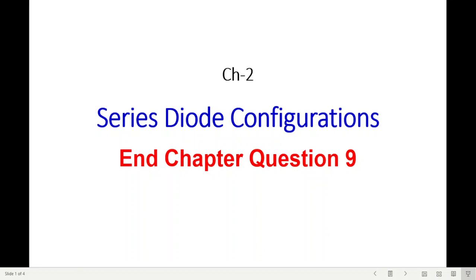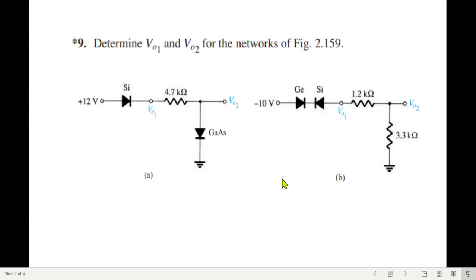Bismillahirrahmanirrahim. This very short video is on the request of a student. Here we'll be solving end-chapter question 9 from chapter 2, which relates to series diode configuration. These are the two questions: part A and part B. We have to determine the voltage V01 and the output voltage V02.